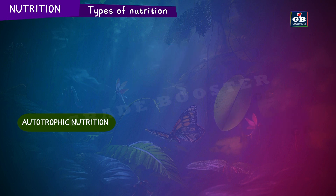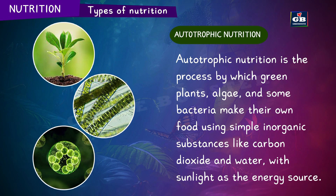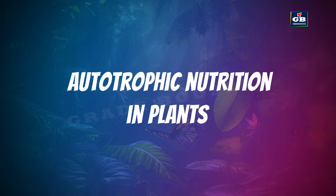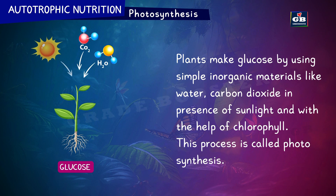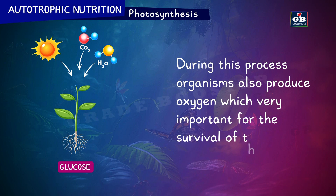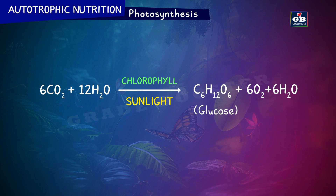Autotrophic nutrition is the process by which green plants, algae and some bacteria make their own food using simple inorganic substances like carbon dioxide and water, with sunlight as the energy source. Plants make glucose by using simple inorganic materials like water and carbon dioxide, in the presence of sunlight and with the help of chlorophyll. This process is called photosynthesis. During this process, organisms also produce oxygen, which is very important for survival. The chemical equation of photosynthesis is: 6CO₂ + 12H₂O → C₆H₁₂O₆ (glucose) + 6O₂ (oxygen) + 6H₂O (water), in the presence of sunlight and chlorophyll.